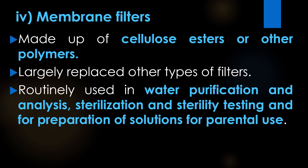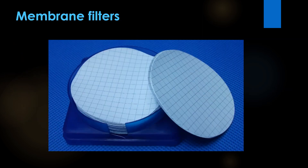The fourth filter is membrane filters. Membrane filters are made up of cellulose esters or other polymers, and have largely replaced other types of filters. They are routinely used in water purification and analysis, sterilization and sterility testing, and for preparation of solutions for parenteral use. This is the image of membrane filters.